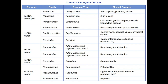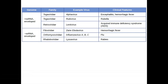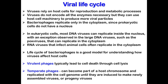Double-stranded RNA viruses, such as the rotavirus, have mRNA transcribed from the RNA genome. The positive single-strand RNA viruses, such as the rhinovirus responsible for the common cold, have genomes that function directly as mRNA. For the negative single-strand RNA viruses, such as flu viruses, the mRNA is transcribed from the RNA genome. Viruses rely on host cells for reproduction and metabolic processes — they don't encode all the enzymes necessary but use host cell machinery to produce more viral particles, the virions.